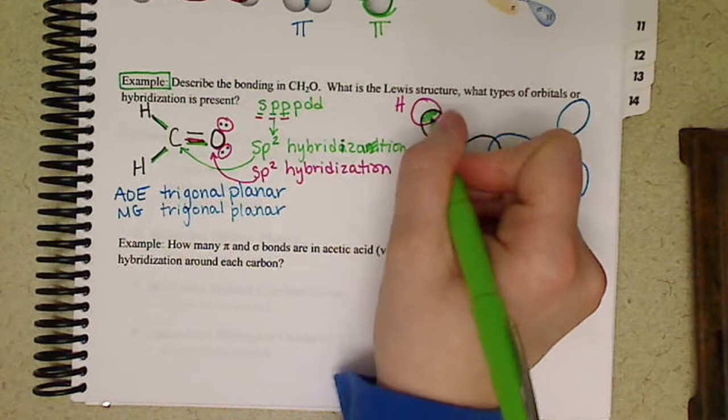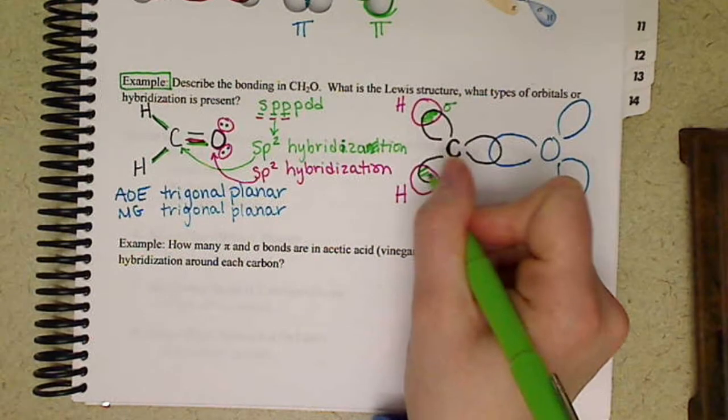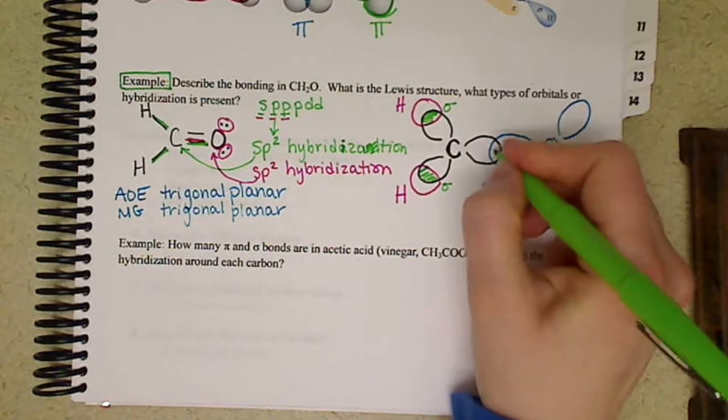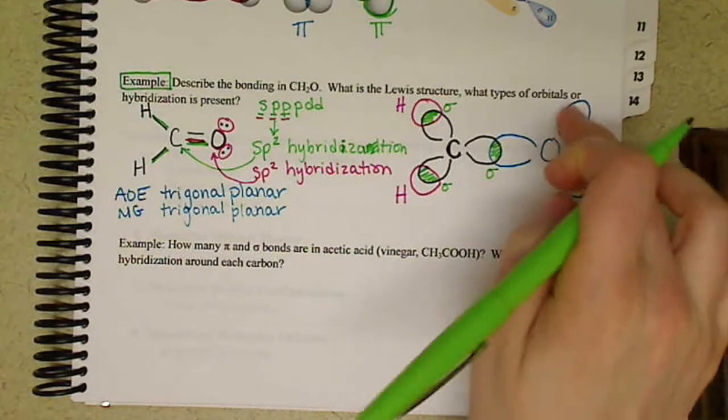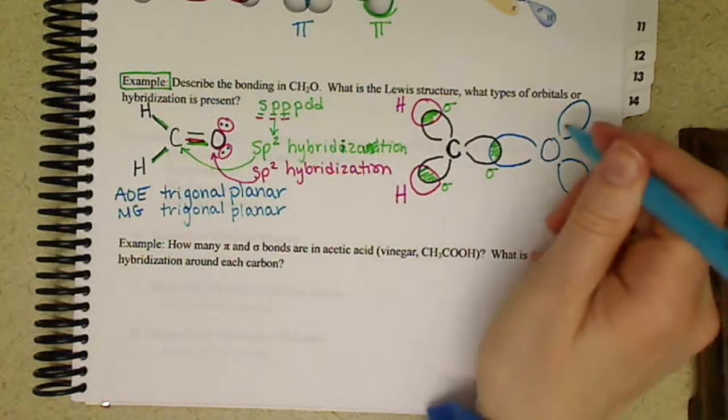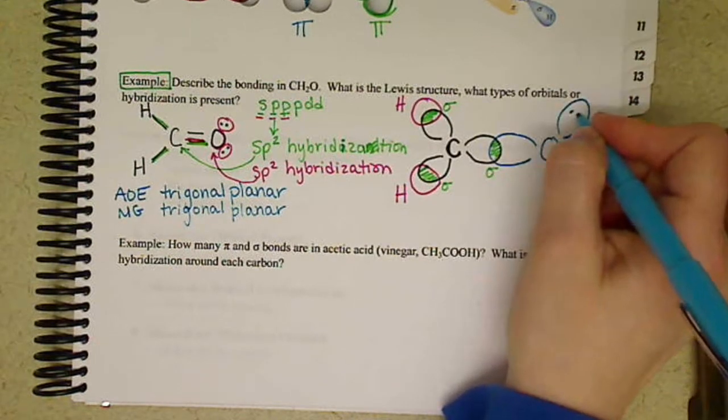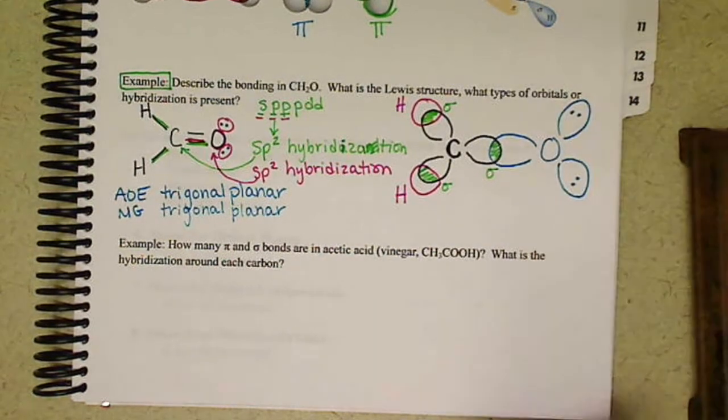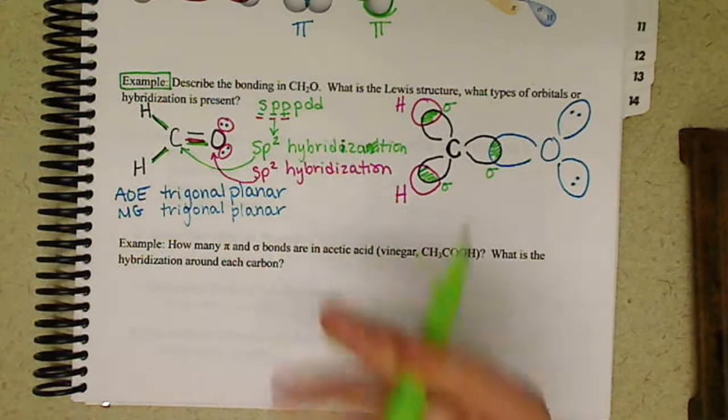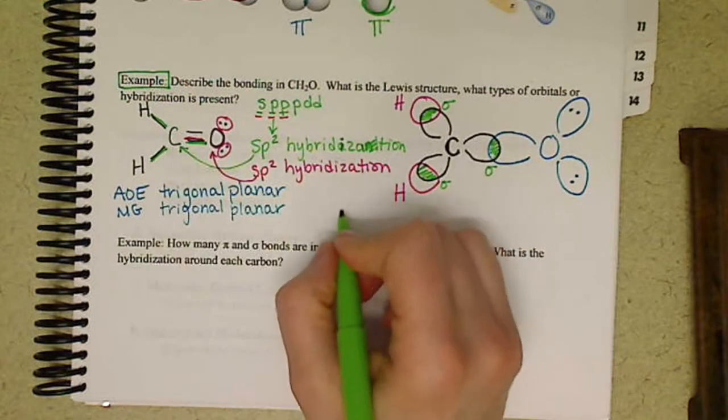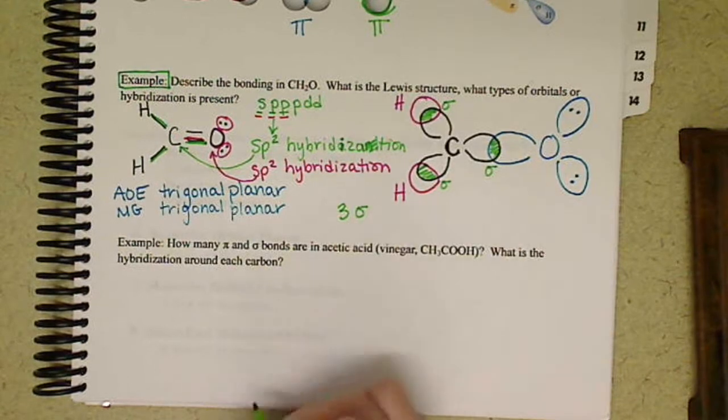And hydrogen can't hybridize, so it has the 1s orbitals that overlap there. So we have a sigma bond, a sigma bond, and a sigma bond. For oxygen over here in our two lobes, we have our lone pair of electrons. So in this molecule here, we have three sigma bonds.